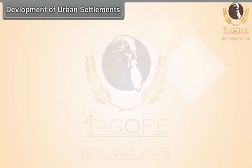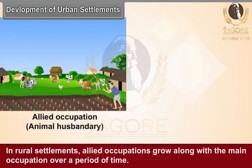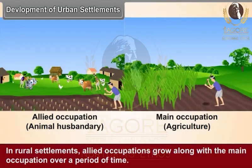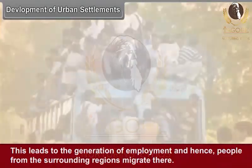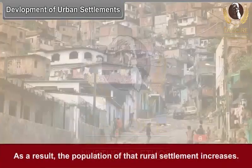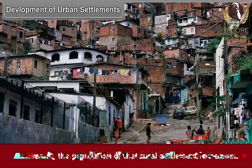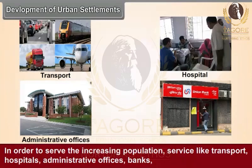Development of Urban Settlements: In rural settlements, allied occupations grow along with the main occupation over a period of time. This leads to the generation of employment and, hence, people from the surrounding regions migrate there. As a result, the population of that rural settlement increases. In order to serve the increasing population, services like transport, hospitals, administrative offices, banks,